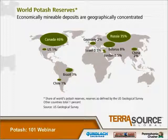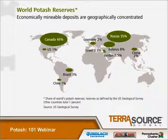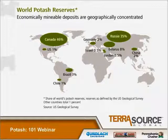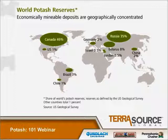The World Potash Reserves, as you can see on the map, there's a good concentration of 46% in Canada around Saskatoon, Saskatchewan, and some in New Brunswick. The United States has 1%. You can also see deposits in Brazil, Chile, Germany, Russia, Jordan, and China.